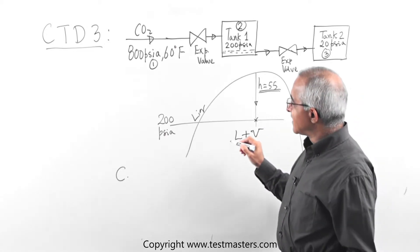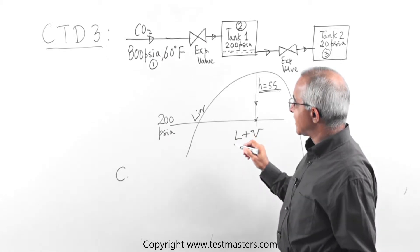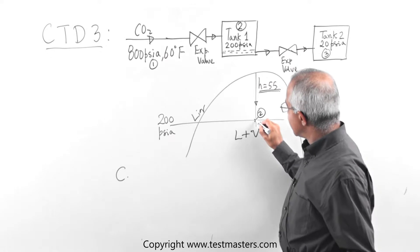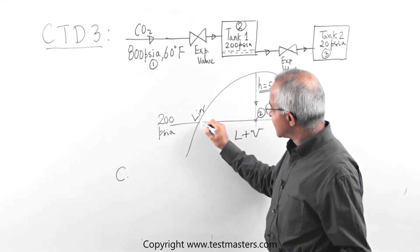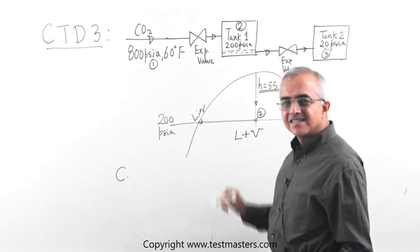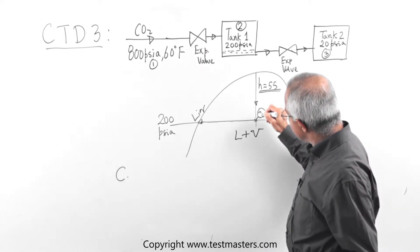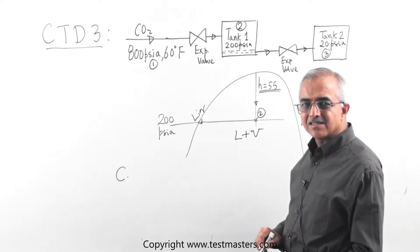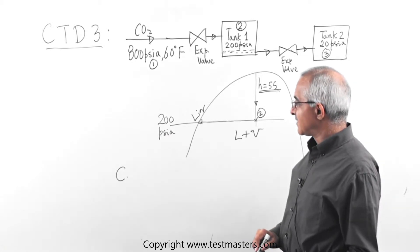But it says the liquid from the first tank is flashed. So what you have to do is, this is state 2, you have to go to the saturated liquid line. This is where you have to be careful. You can't go directly from here to 20 psi. That will be wrong. That's what I mentioned earlier. You have to be careful. It can be tricky.